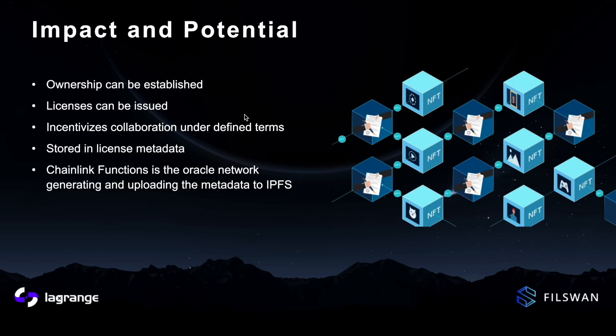With data NFTs, ownership of data can be established, which allows transferability and sales while maintaining a verifiable proof of ownership. NFT owners can issue licenses, which incentivizes collaboration under defined terms and conditions for how the data can be used. These specifications are stored in the metadata of licenses to help data owners maintain the integrity of their work. Chainlink functions will continue to provide a decentralized oracle network, enabling trust-minimized computations. The ability to run scripts and code before and after API calls will lead to more innovative and complex projects in the future.